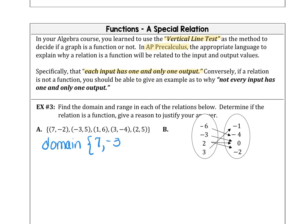7, -3, 1, 3, and 2. The range would be all the output values or the y values. That would be -2, 5, 6, -4, and we don't need to list 5 again.